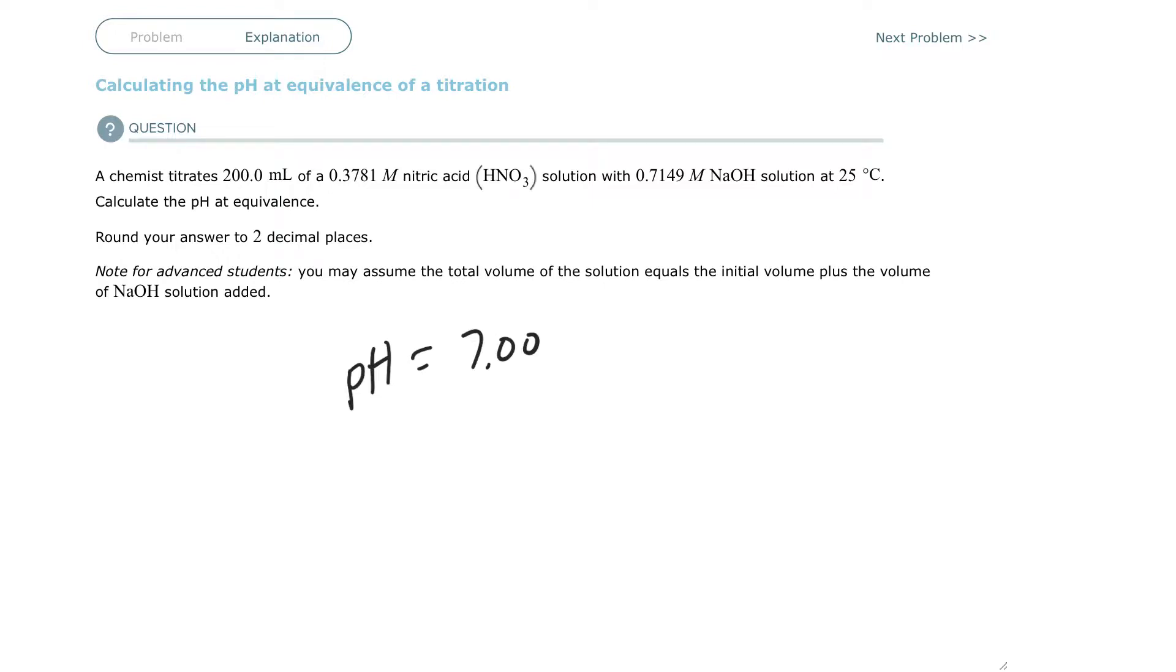But if you have a strong acid and a strong base, they will titrate, and its equivalent point will exactly be seven. So the dye or the indicator dye that you use to know exactly when you've reached the equivalence point, you would choose based upon what you're titrating.